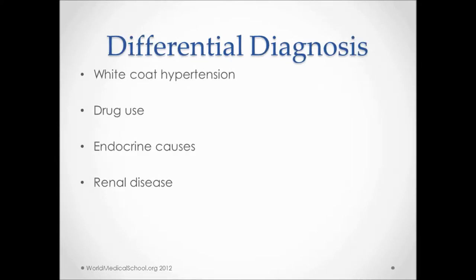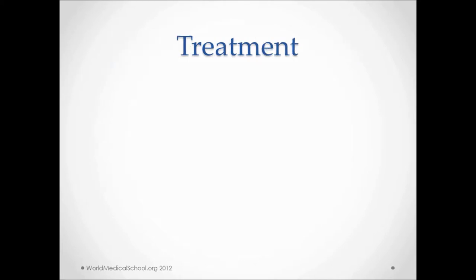In differential diagnosis, you may want to rule out white coat hypertension by asking the patient to measure his or her blood pressure at home or by going to the pharmacy. Other causes like drug use, endocrine, and renal diseases have already been discussed.